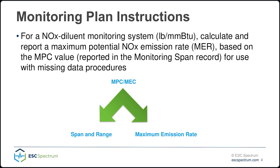From the monitoring plan instructions: for a NOx diluent monitoring system in pounds per millimeter BTU, calculate and report your maximum potential NOx emissions rate based on the MPC for use with missing data procedures. So this is a visualization of how a new MPC leads to a new span and range and a new maximum emissions rate.